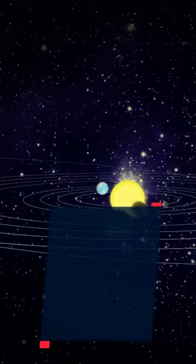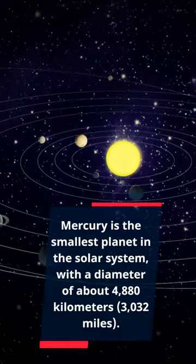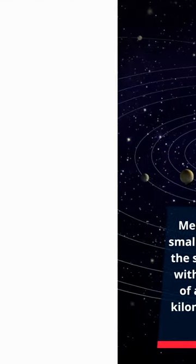Mercury is the smallest planet in the solar system, with a diameter of about 4,880 kilometers, 3,032 miles.